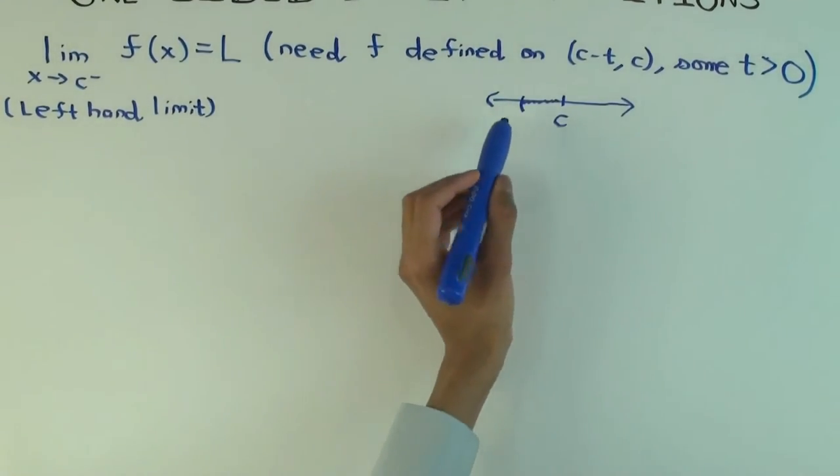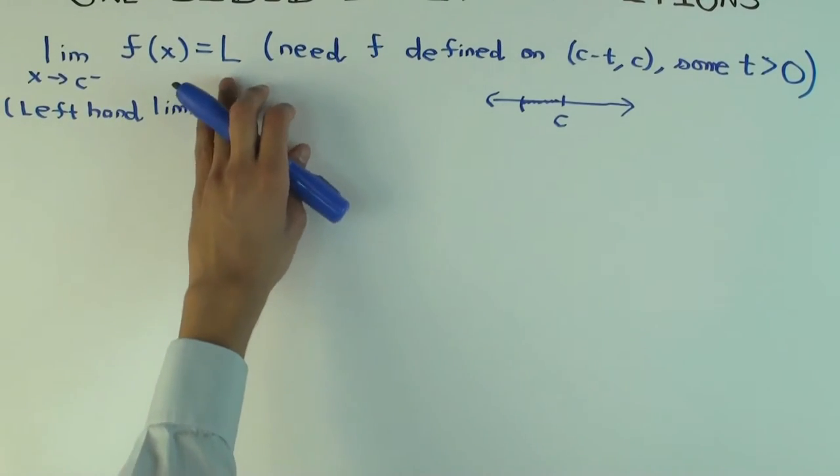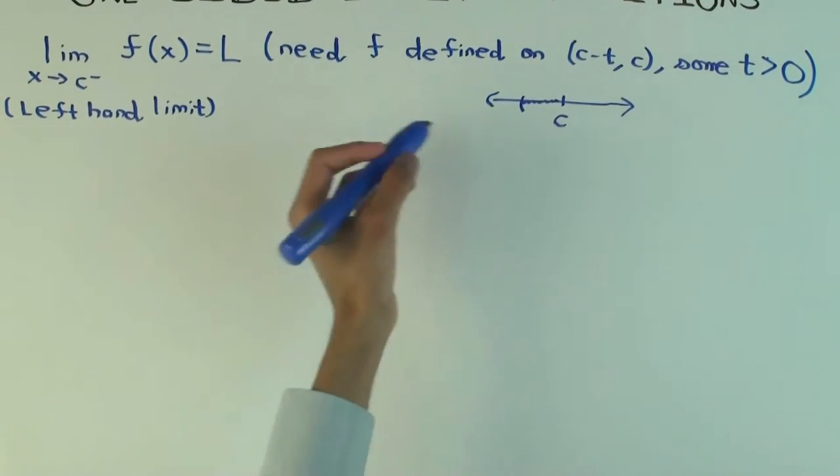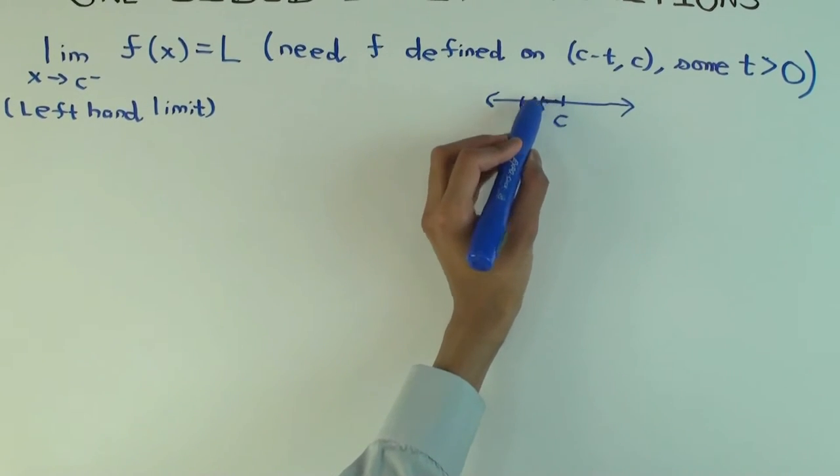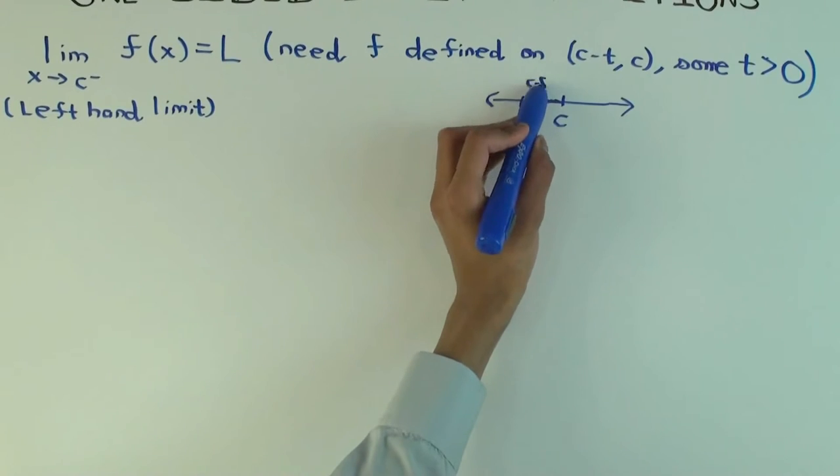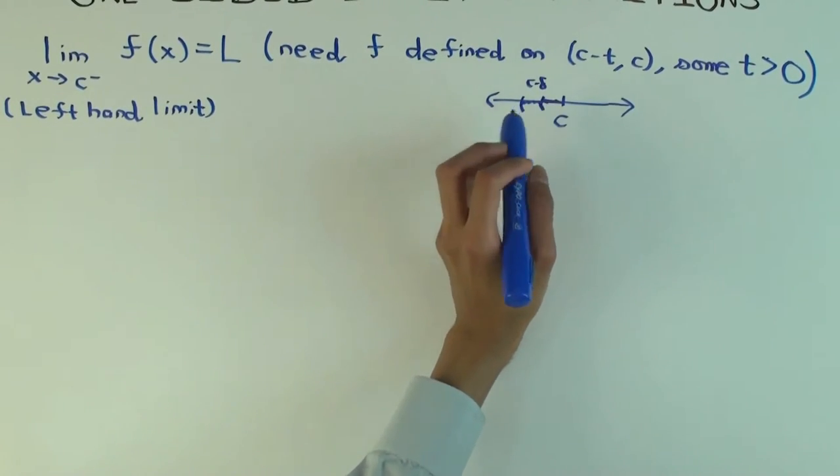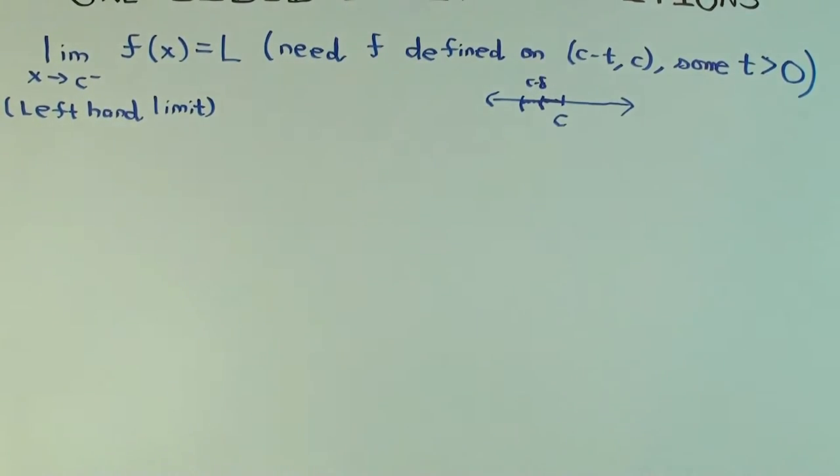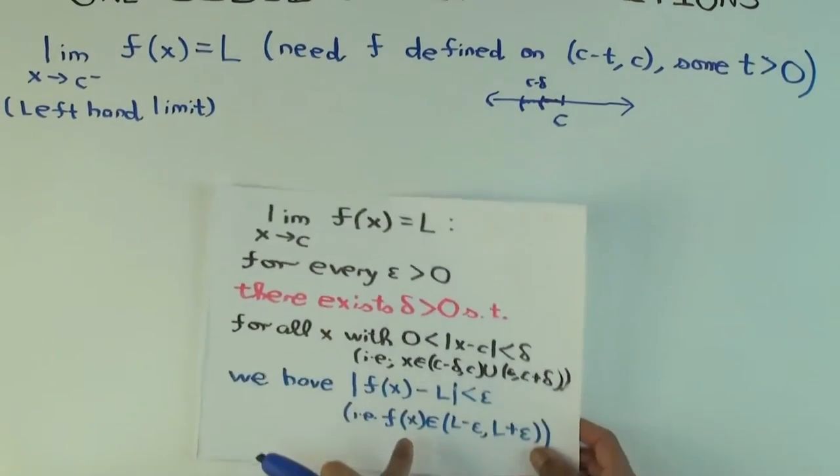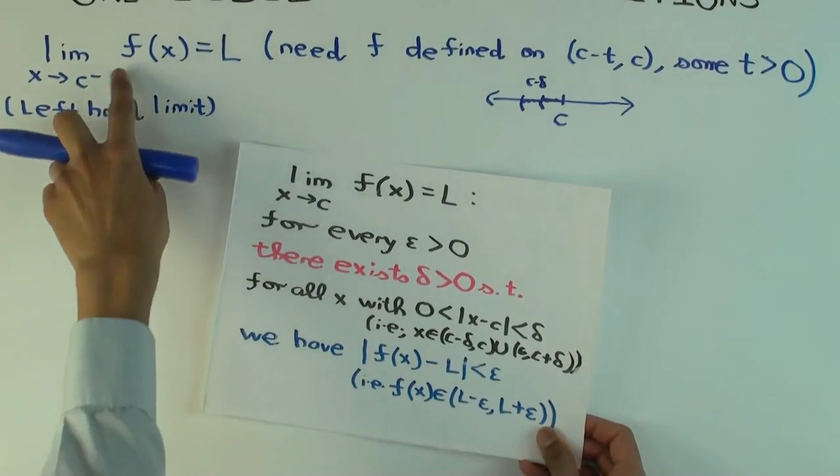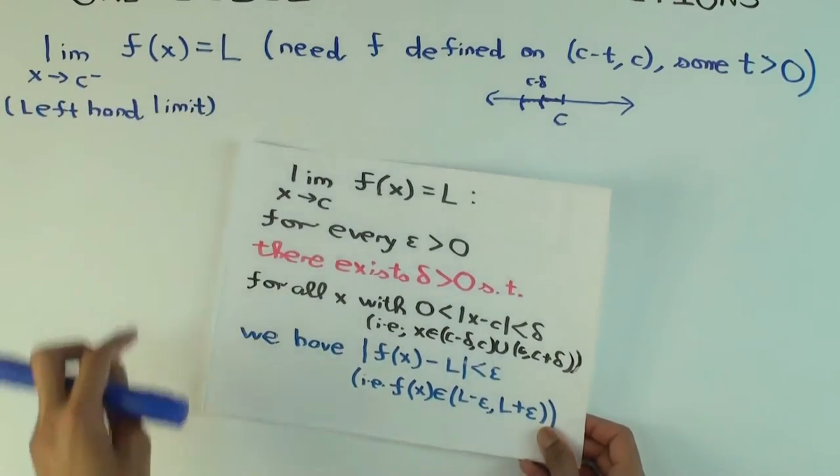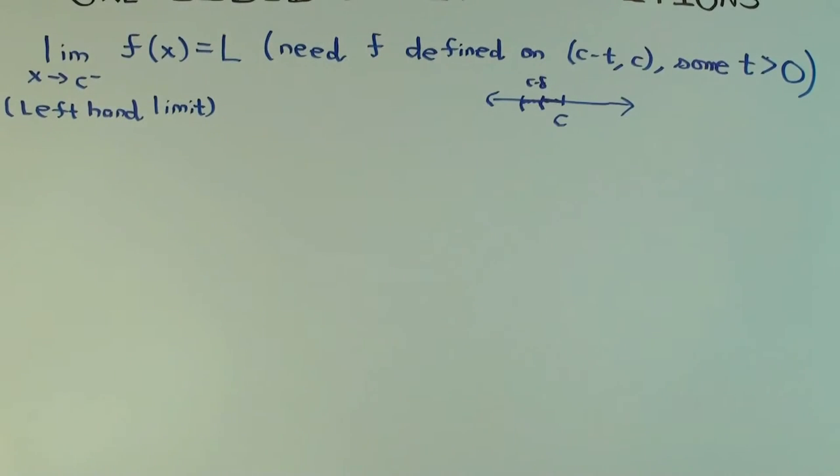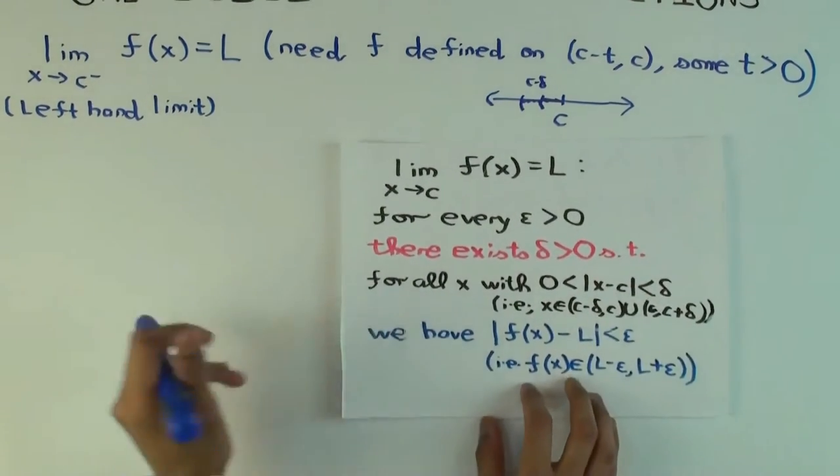And what we are saying is that for any epsilon, so any epsilon around L, you can find a delta such that if you restrict attention to the interval from c minus delta to c, then the f value there is within epsilon distance of L. Now the f value could be epsilon to the left or the right. So we take left hand limit on the domain side. It doesn't have to approach from the left on the other side. Let me just write down the full definition. We want to keep this on the side.